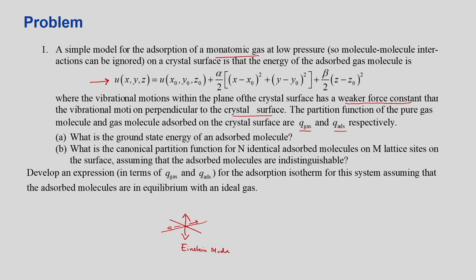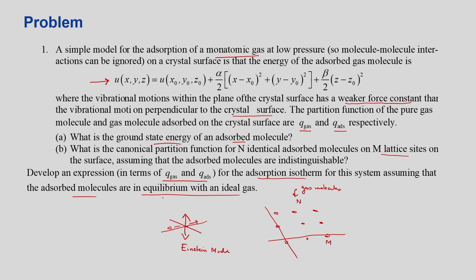Now, the set of questions follow. It states: what is the ground state energy of an adsorbed molecule? Second question: what is the canonical potential function for N identical adsorbed molecules on M lattice sites? You have M different sites, M is greater than N, and N is the number of gas molecules that adsorb onto the crystalline surface. It says develop the function in terms of Q_gas and Q_adsorbed, assuming the adsorbed molecules are in equilibrium with the ideal gas. Whenever these words come — equilibrium — you have to equate their chemical potentials. So mu_gas equals mu_adsorbed, because equal chemical potential means steady-state equilibrium is reached.